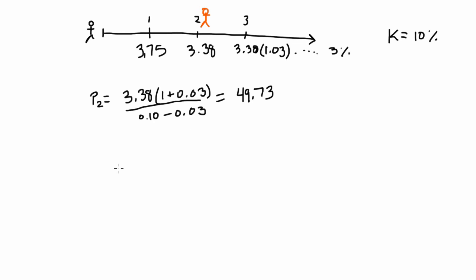Now we can redraw our timeline and actually come up with a price of the stock. We will still receive the dividend of $3.75 in year one. We will still receive the dividend of $3.38 in period two, but we also have that terminal value of $49.73.